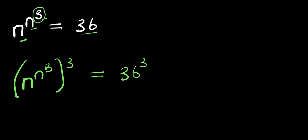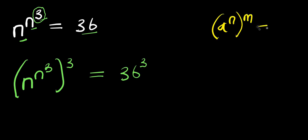So the next thing would be for us to consider this identity. If you have a to the power of n, and this is raised to the power of m, this equals a to the power of m, and this is raised to the power of n.